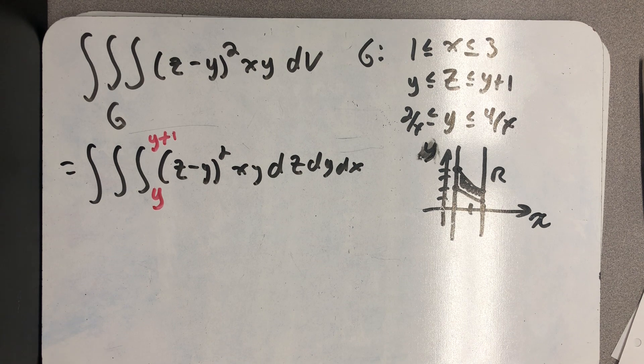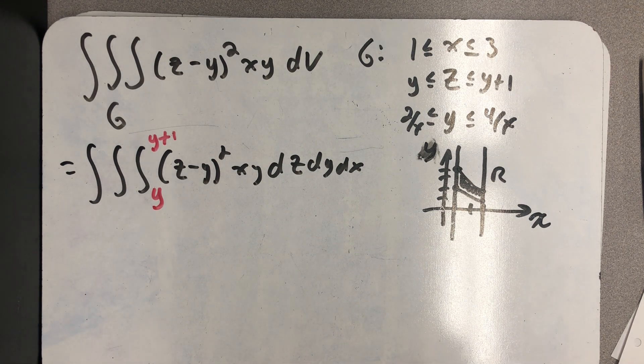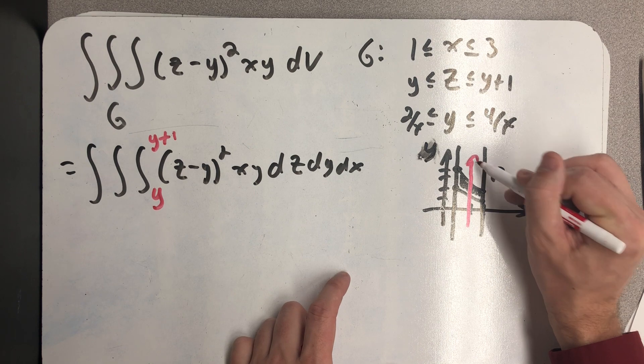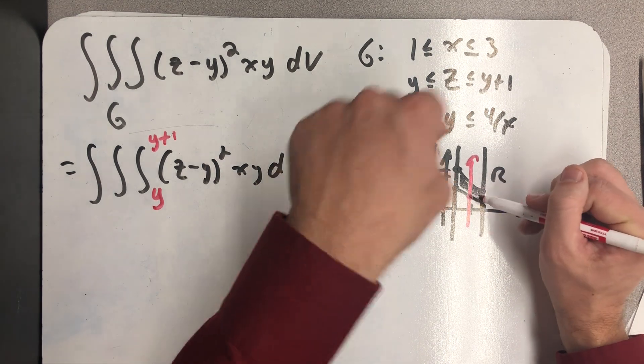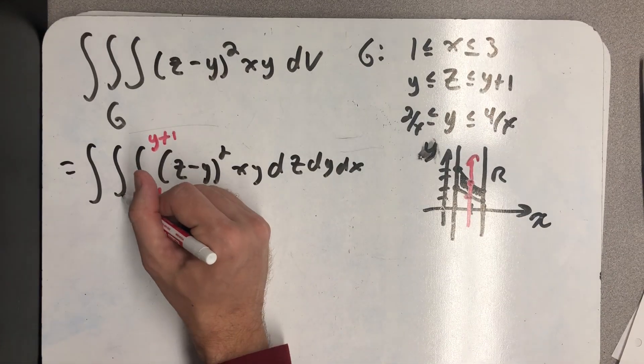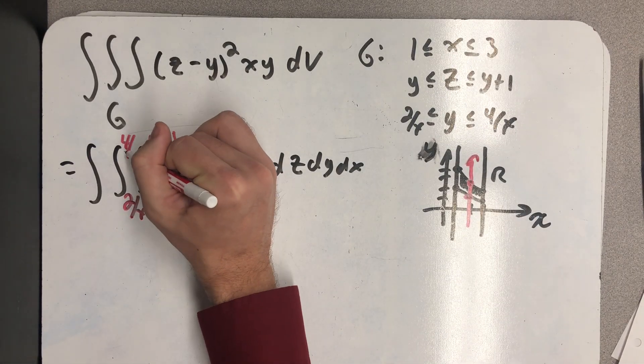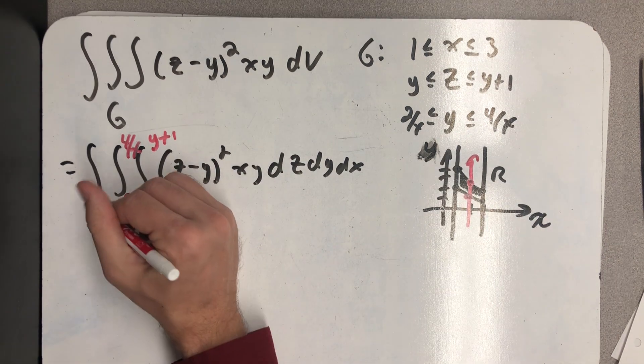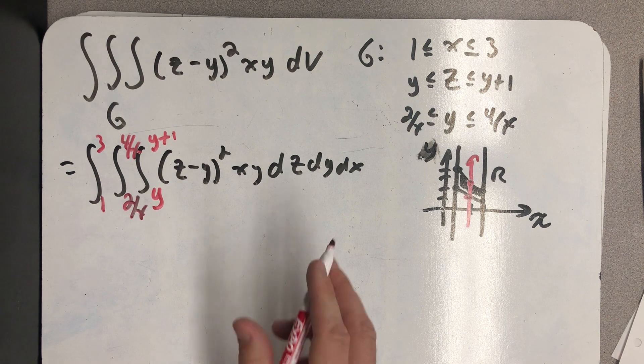So if I think about a ray in increasing order of z coming straight up out of the board, it would hit the plane at z equals y, and then the plane at z equals y plus one. And so there I have it. I have my bounds for z, and to find the bounds for x and y I can use this projection. I first hit the lower hyperbola and then the upper one. And then the bounds for x are from one to three. And so here's my triple integral with no substitution.